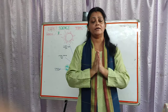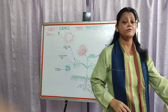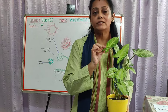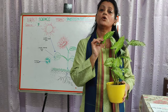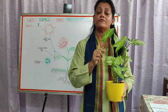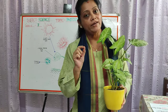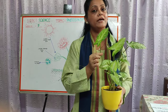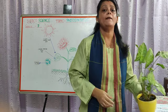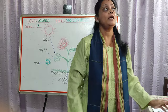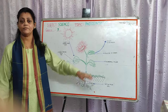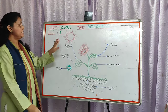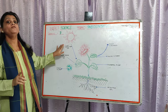Have you ever wondered why plants are green in color? The leaves of the plant are green because they have a structure inside the cell called chloroplast. These chloroplasts have a pigment called chlorophyll, and this pigment chlorophyll gives the green color to the leaves. Chlorophyll plays a very important role in the process of photosynthesis. Another very important requirement for photosynthesis is light, primarily in the form of sunlight.